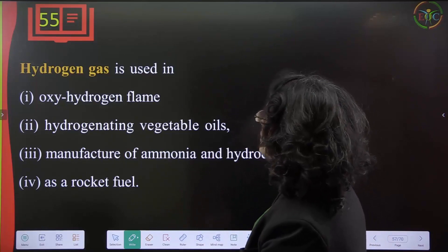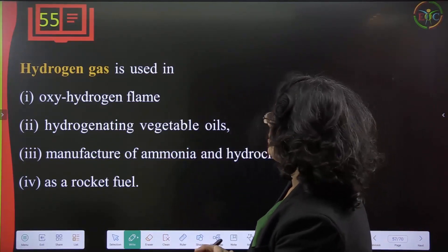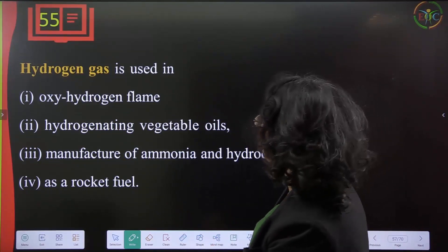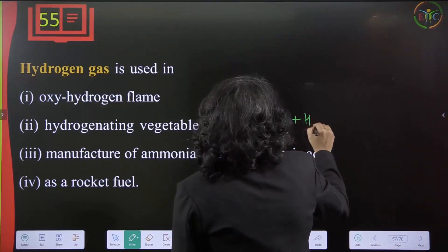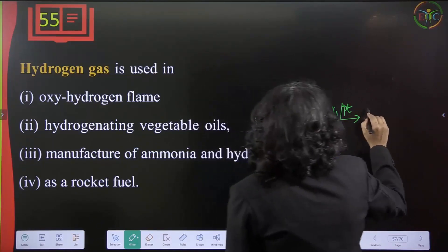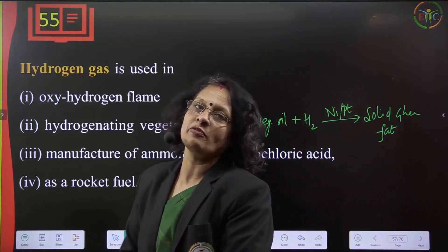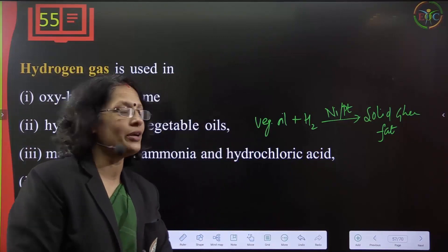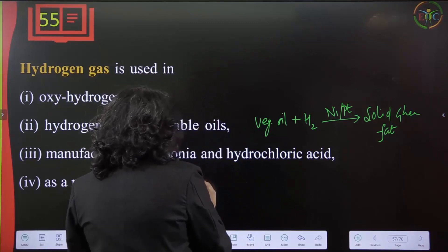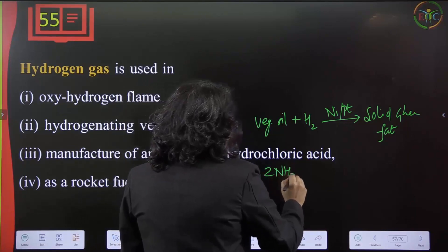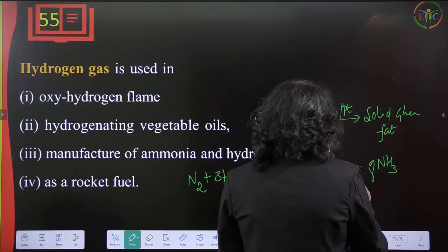Hydrogen gas can be used in oxy-hydrogen flames for welding and melting. It is also used in hydrogenation of vegetable oil — vegetable oil plus hydrogen in the presence of a nickel or platinum catalyst produces solid fat (vanaspati ghee). Hydrogen is also used in manufacturing of ammonia by Haber's process: N₂ + 3H₂ → 2NH₃. This is a very popular commercial process.